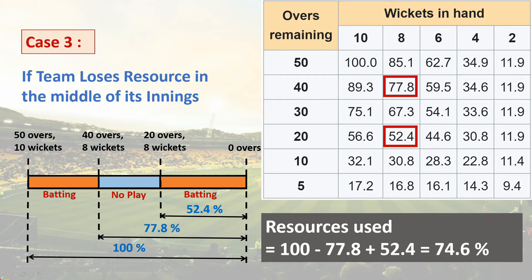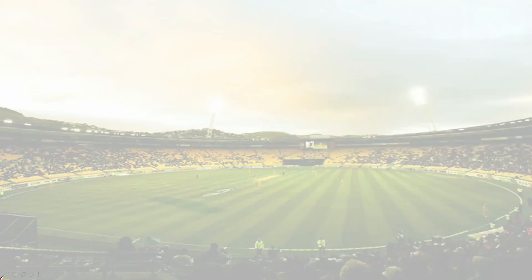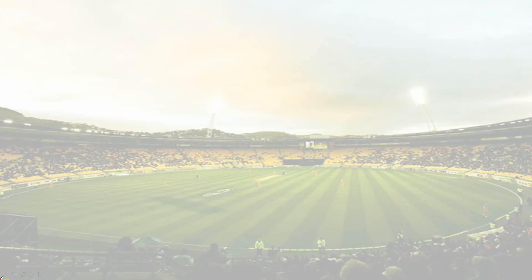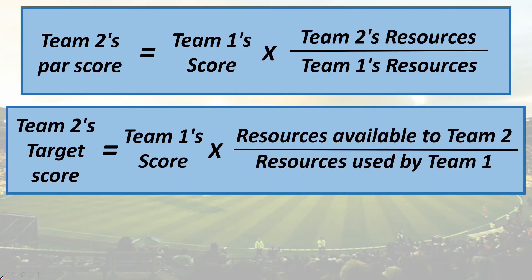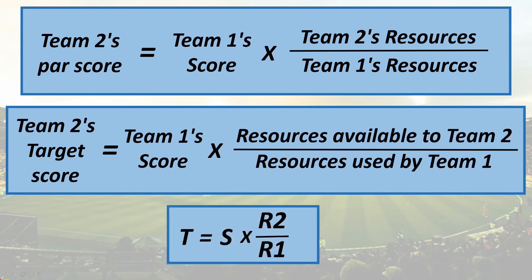Multiple interruptions are handled in a similar way. Coming back to the formula for par score, team 2's target score T equals team 1's score S multiplied by team 2's resources R2 divided by team 1's resources R1. In short: T = S × R2 / R1.